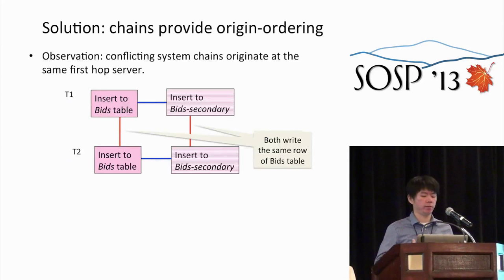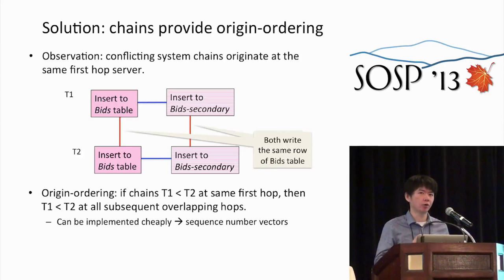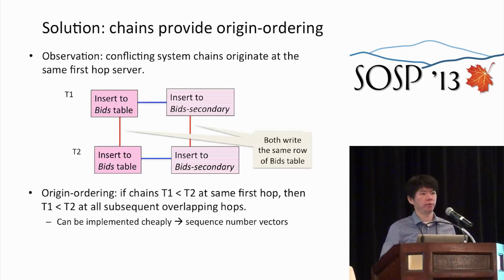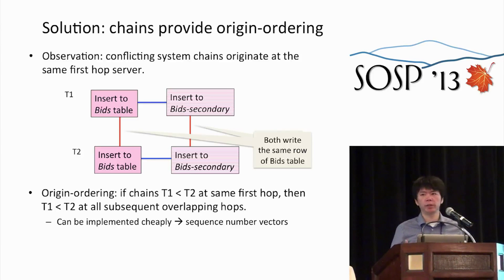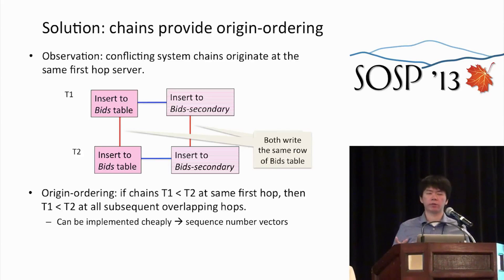Our solution is based on the observation that conflicting system chains modify the same variable, so they must start from the same first-hop server. We expand the chain property to guarantee first-origin ordering: if chain T1 starts before T2 at the first hop, then in all later hops we guarantee that T1 executes before T2. This can be cheaply implemented using sequence number vectors. By obeying that order on all later hops, we can remove conflicts in all later hops and only have conflict on the first hop, which helps reduce most SC cycles.